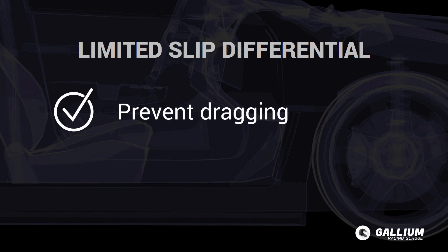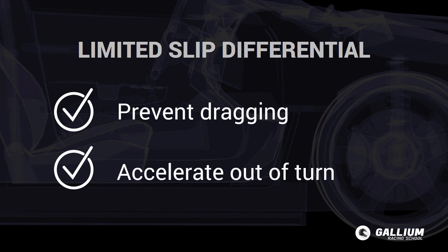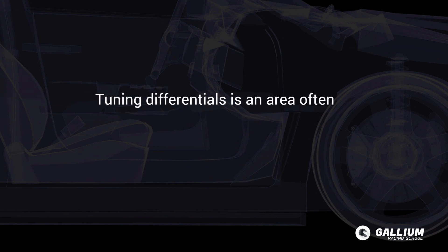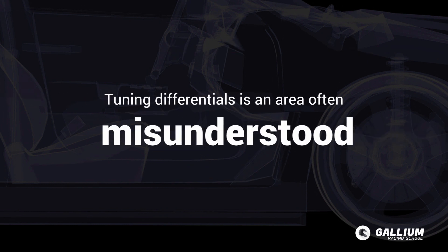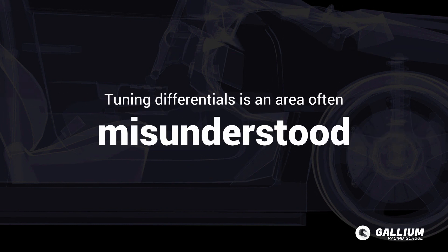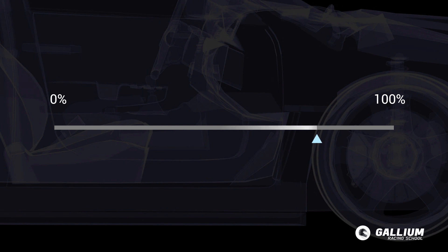That's why you'll upgrade to limited slip differentials, or LSDs, which allow us to limit that difference in wheel speed. We get some give to prevent dragging the outside wheel but still keep our ability to accelerate harder out of a turn. Tuning differentials is an area often misunderstood, but it's actually very easy to understand if we remember two key points.